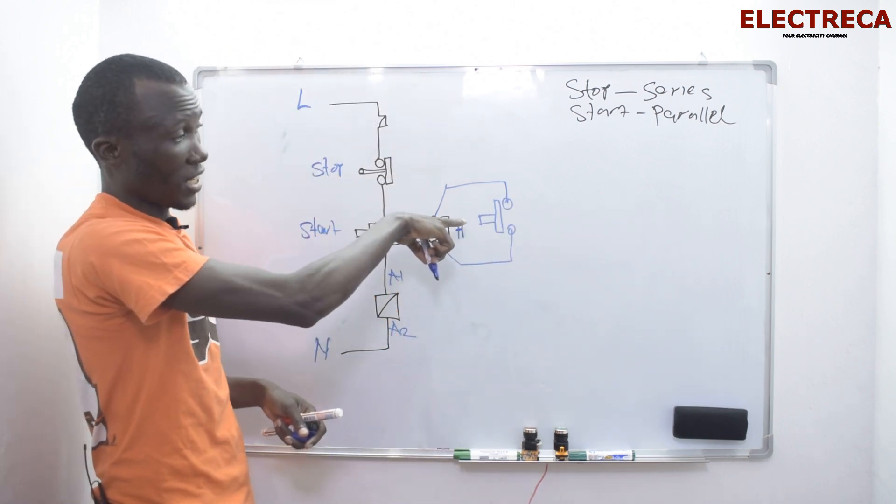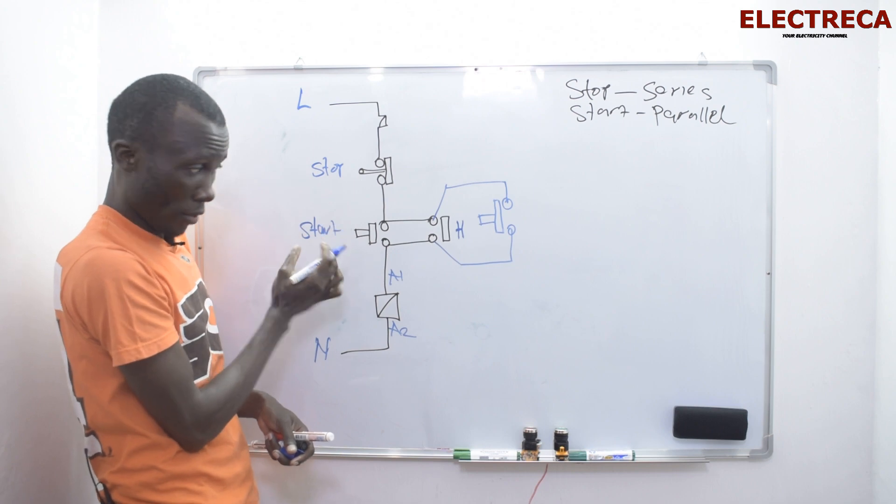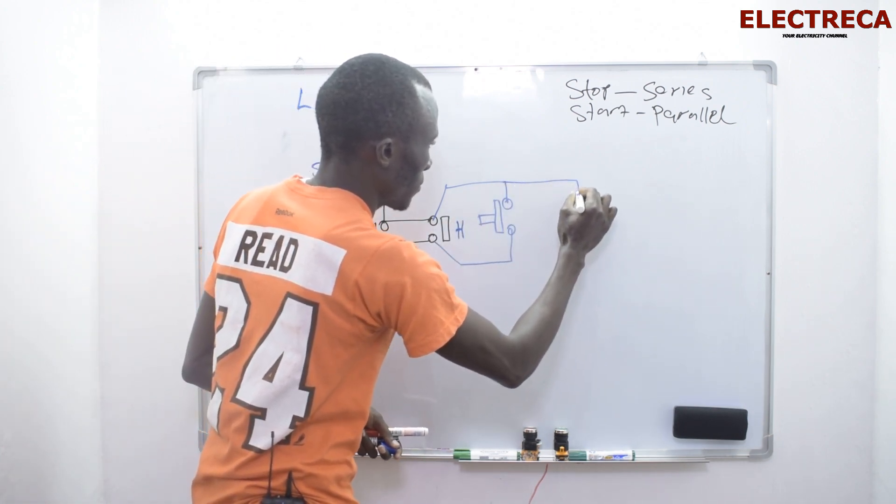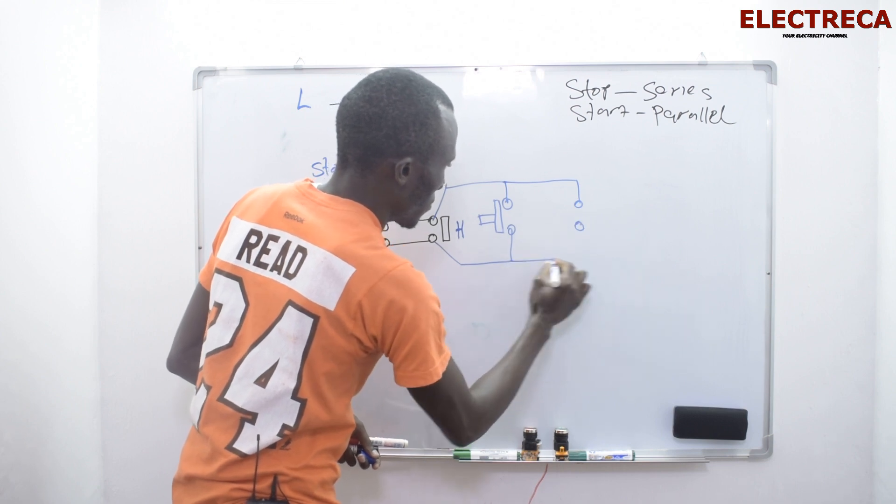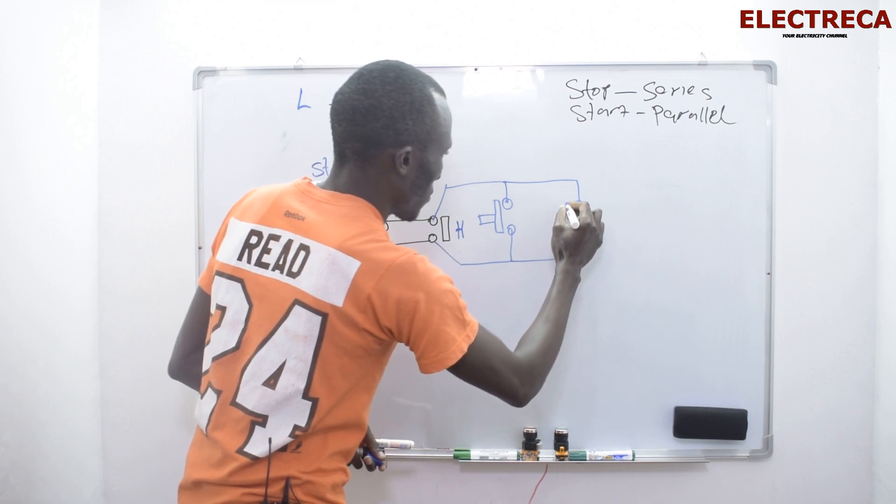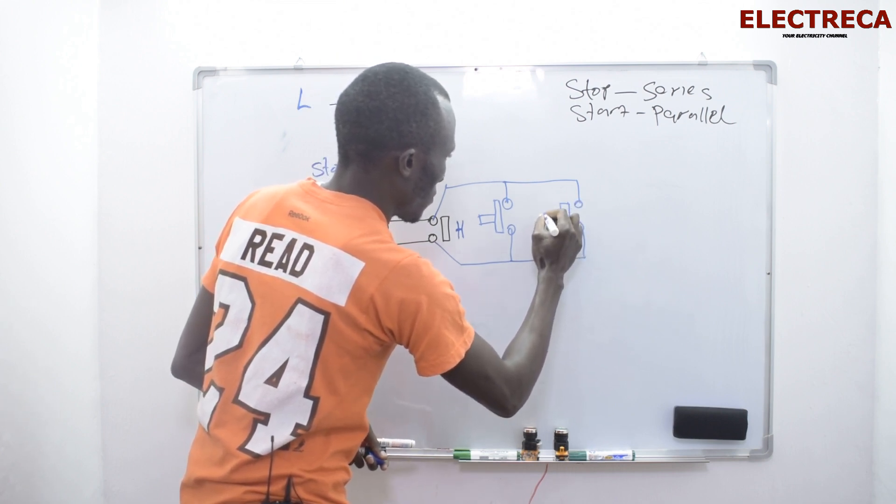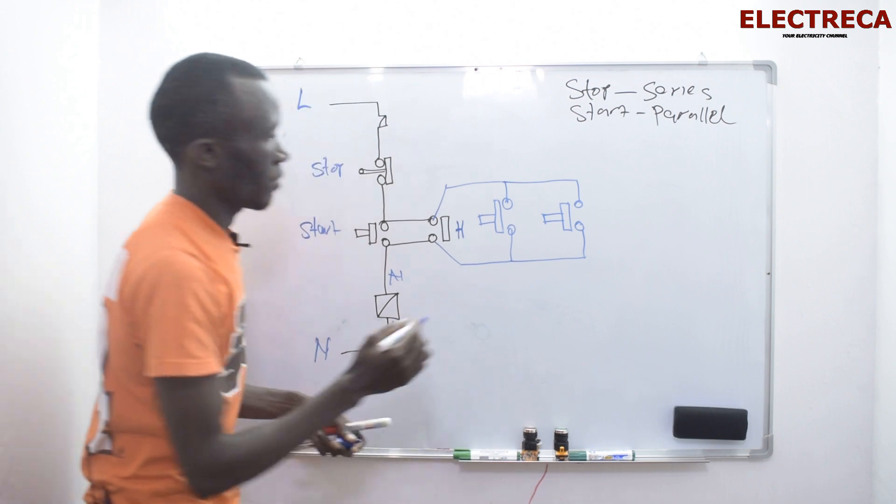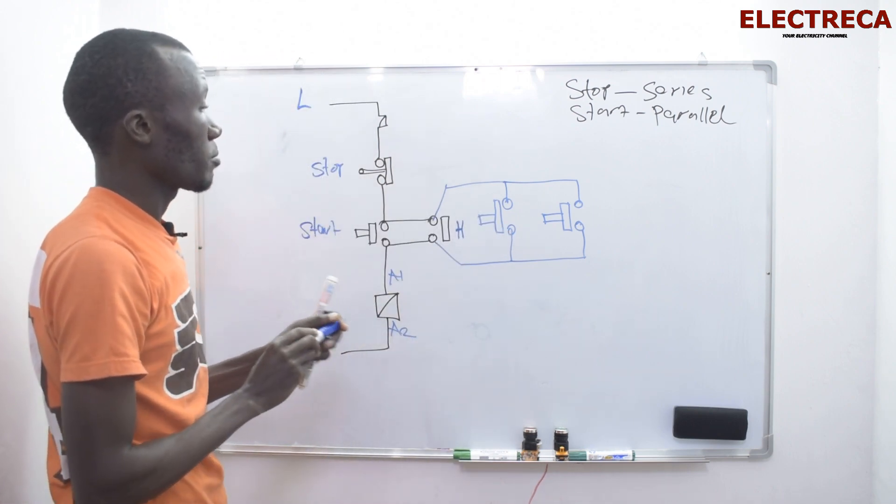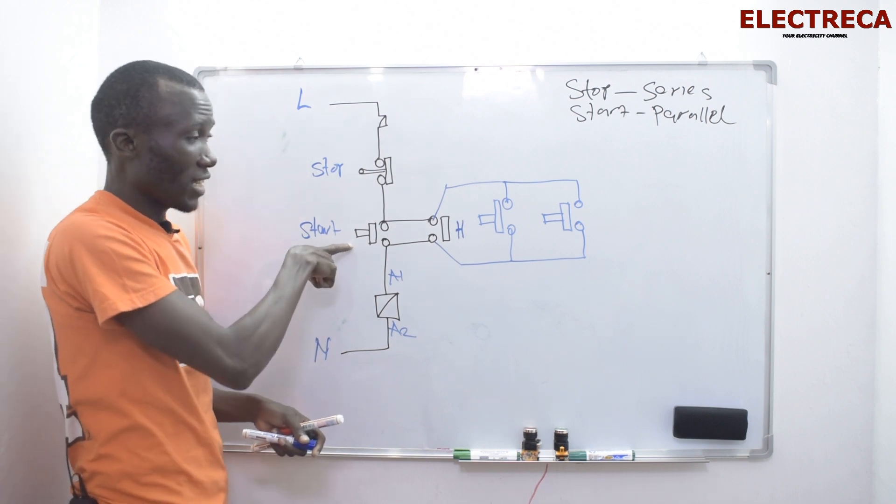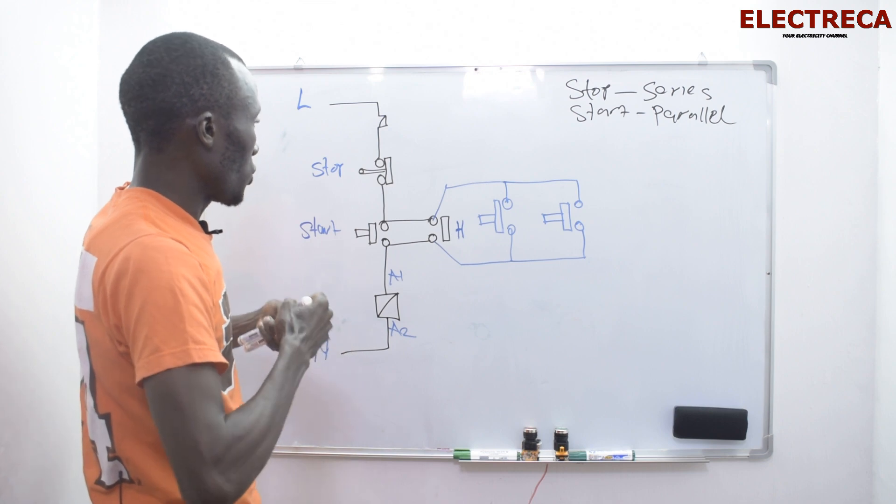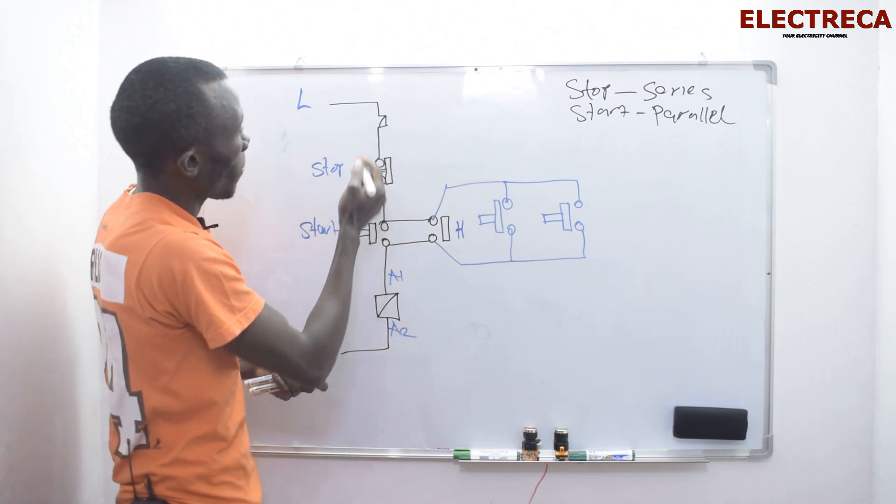That is the start button, the second one. You see it is parallel to the first one. That is the third one. Now you have three start buttons. You can start the circuit from here, you can start the circuit from here or here.